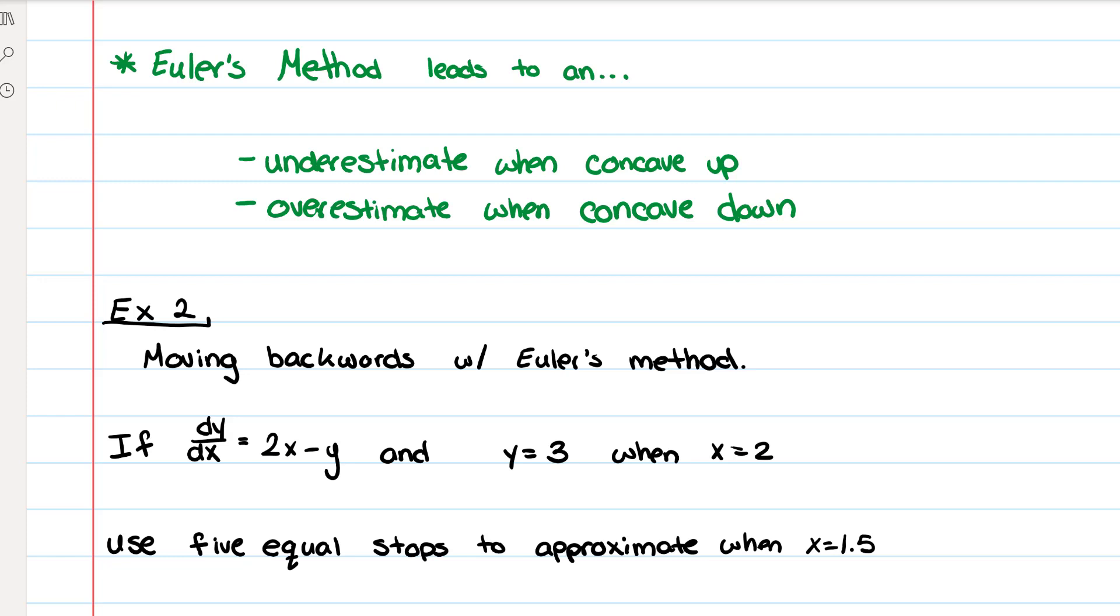Using Euler's method, you're going to get an underestimate if the graph is concave up. So if your graph is something like this, if it bends up, either like that or like this...